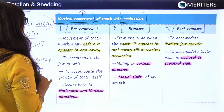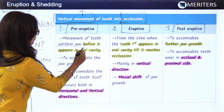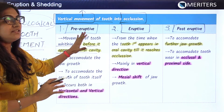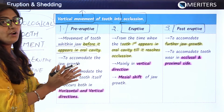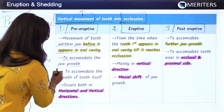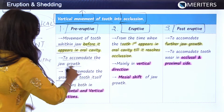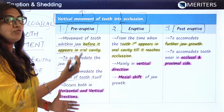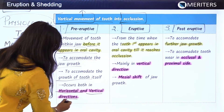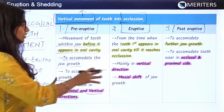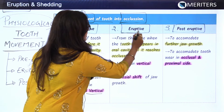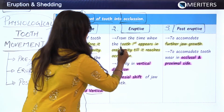In the pre-eruptive phase, movement of the teeth occurs within the jaw before it appears in the oral cavity. The tooth is within the jaw and has not yet appeared in the oral cavity. To accommodate jaw growth and the growth of the tooth itself, movement occurs both in the horizontal direction and the vertical direction.